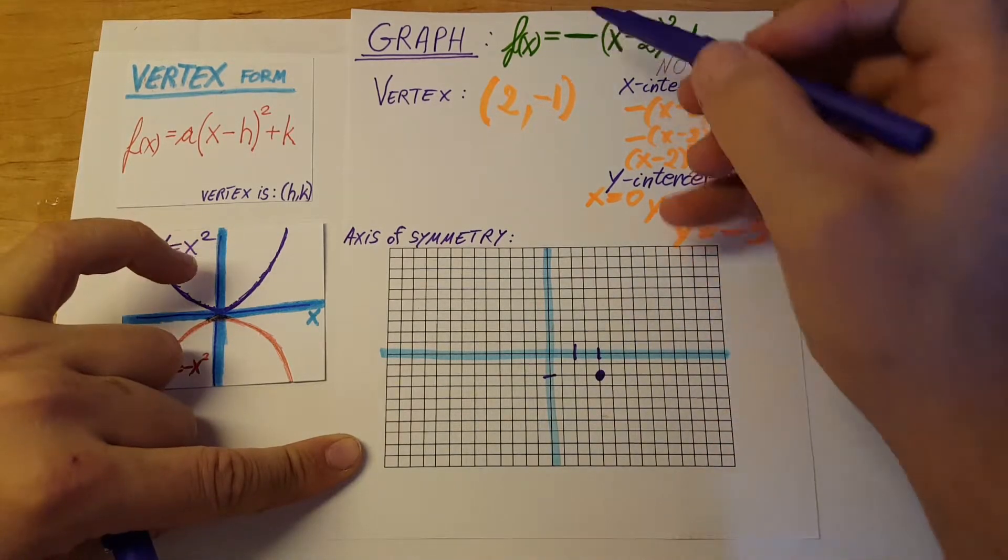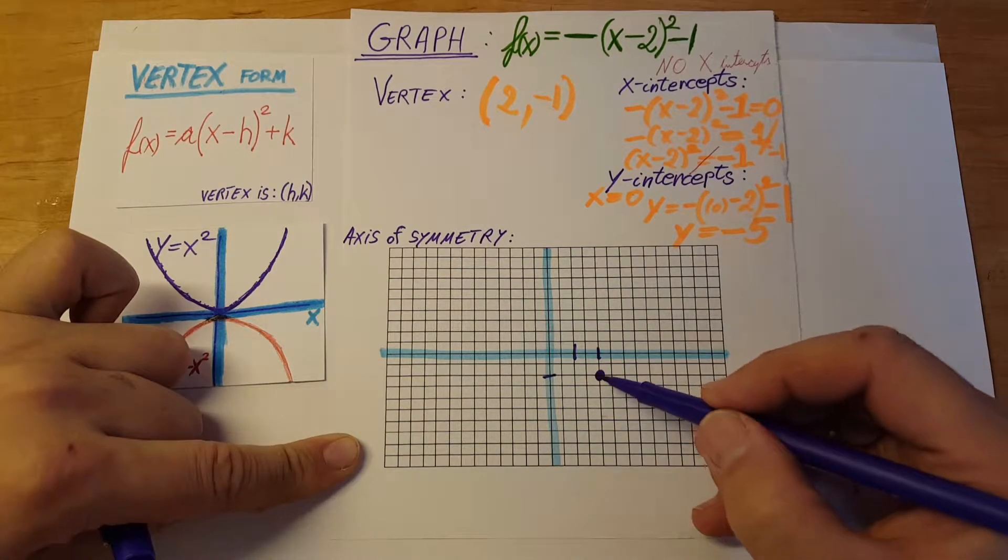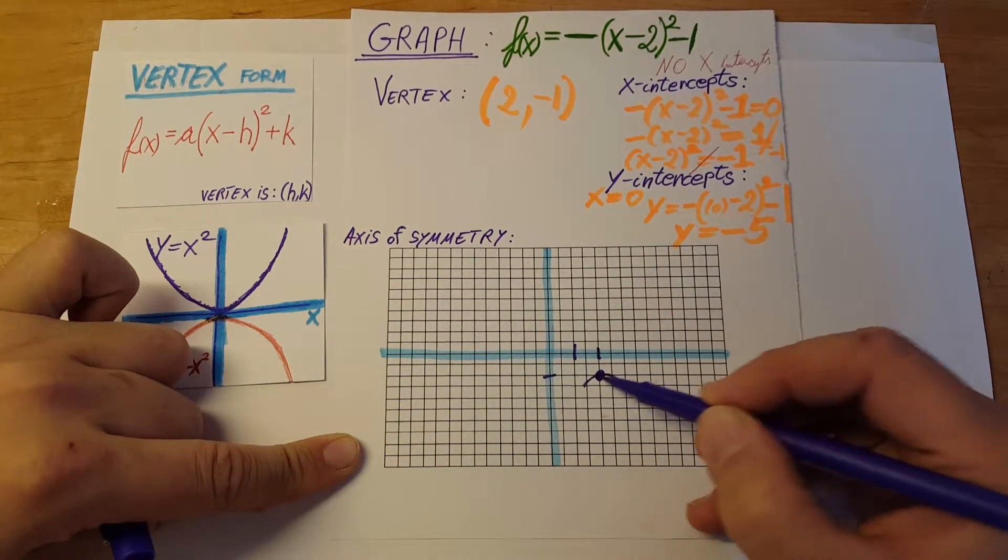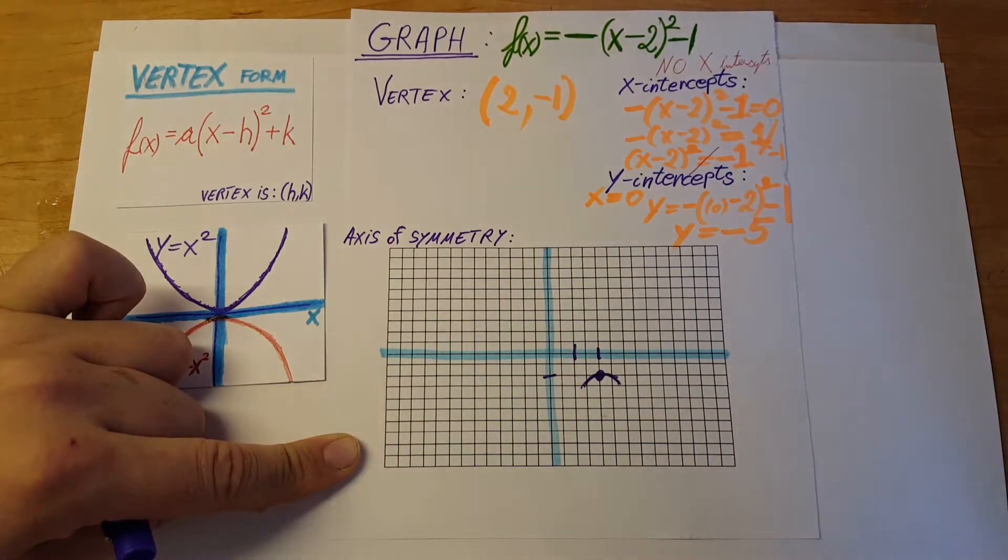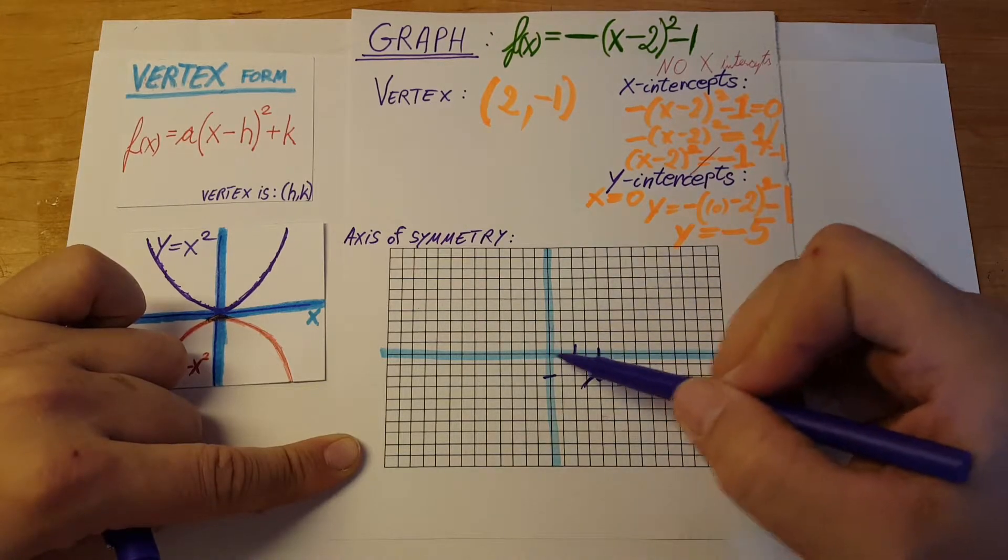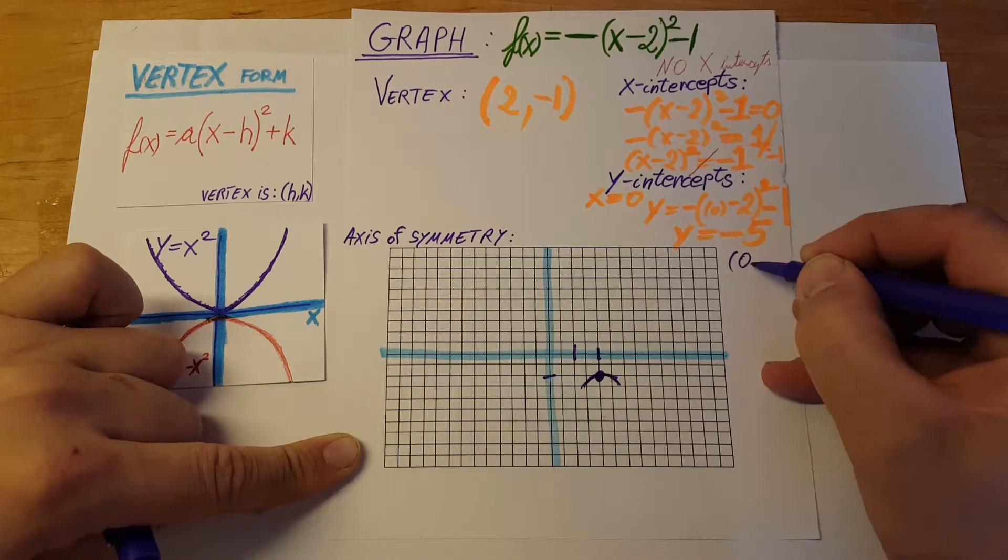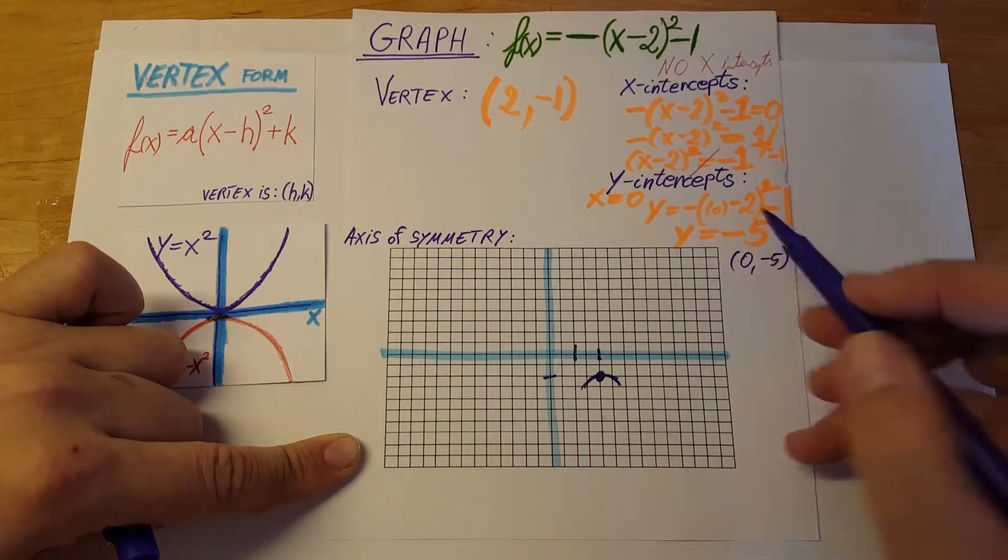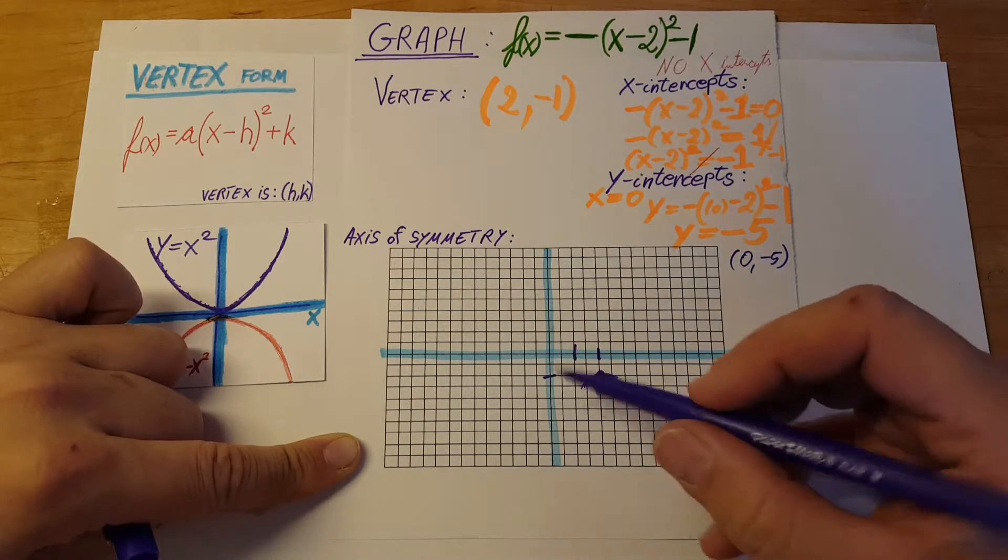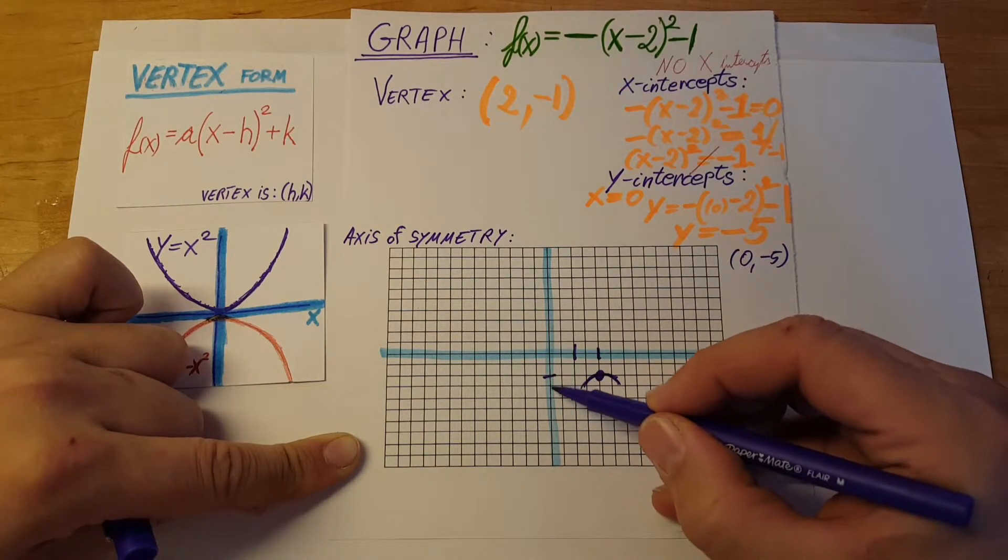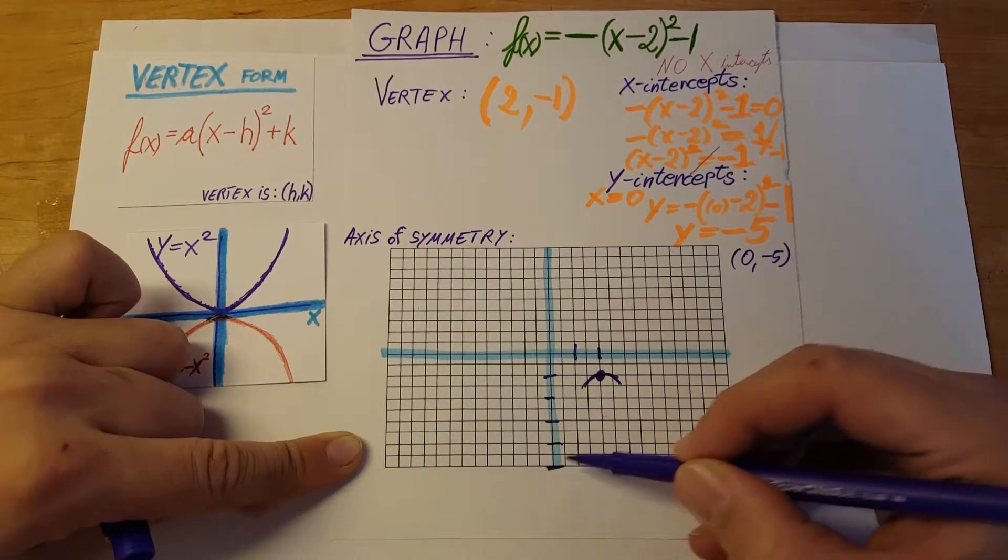As we said, because of the negative, it's reflected across the x-axis, so it will open downwards. Now we know there's no x-intercept, but we have a y-intercept at (0, -5). We found it right here: when x is 0, y is -5. So that's at negative one, negative two, three, four, and five, right here.